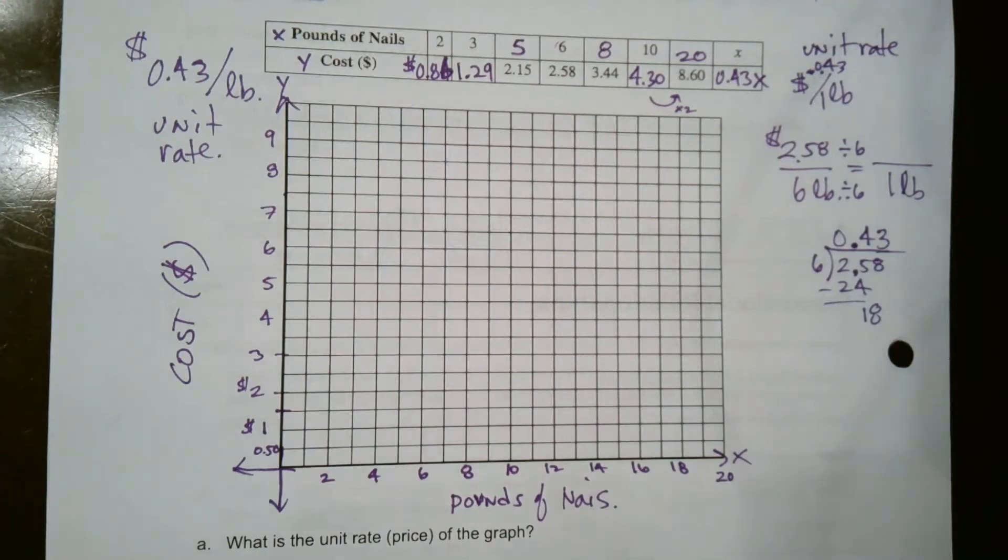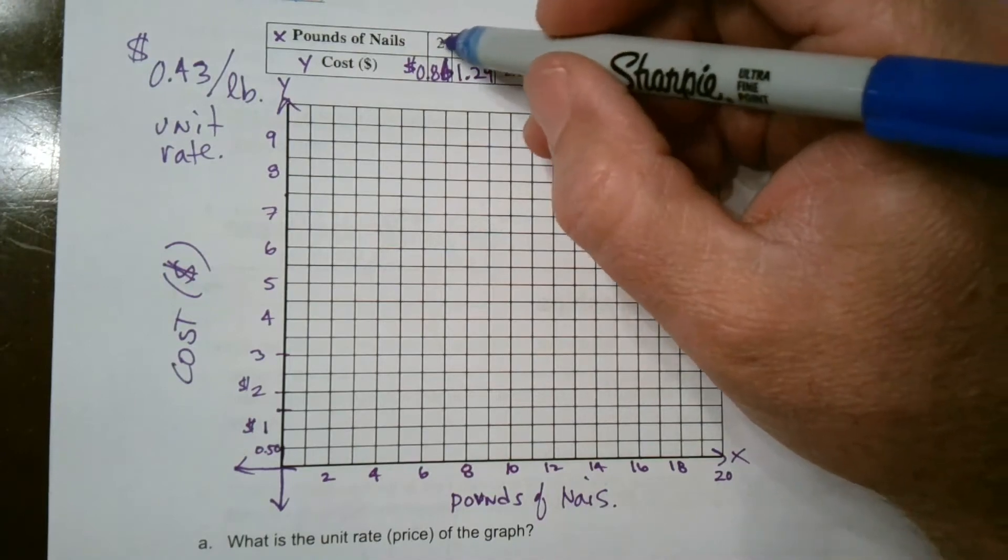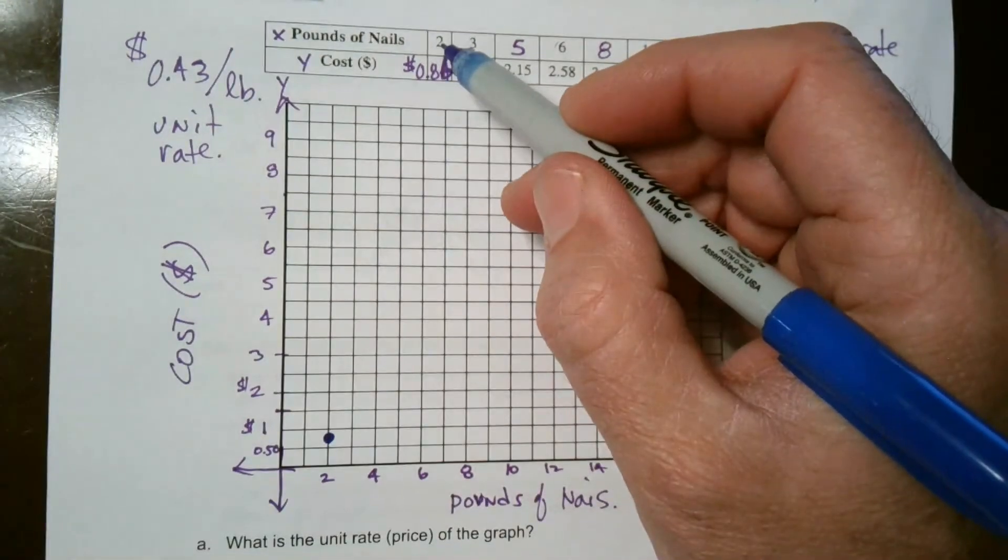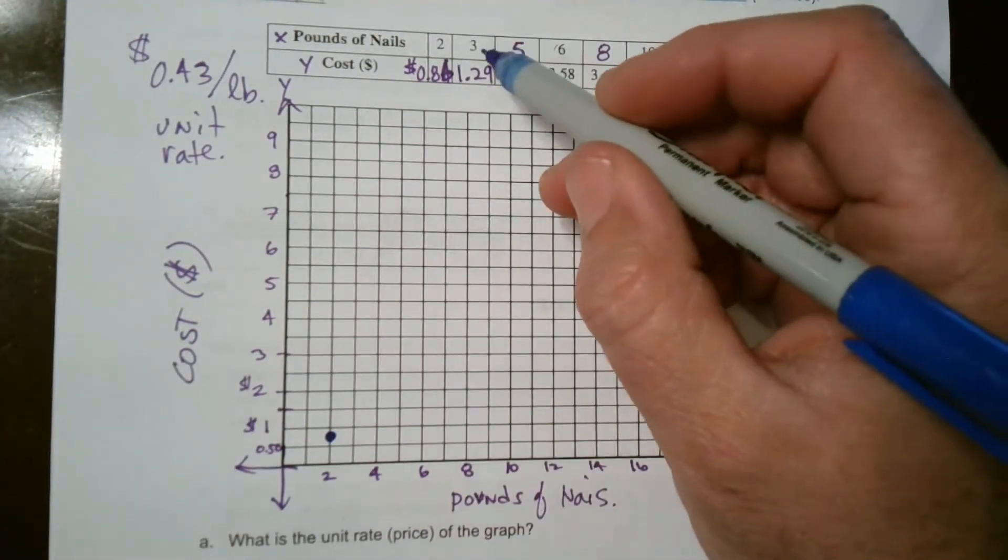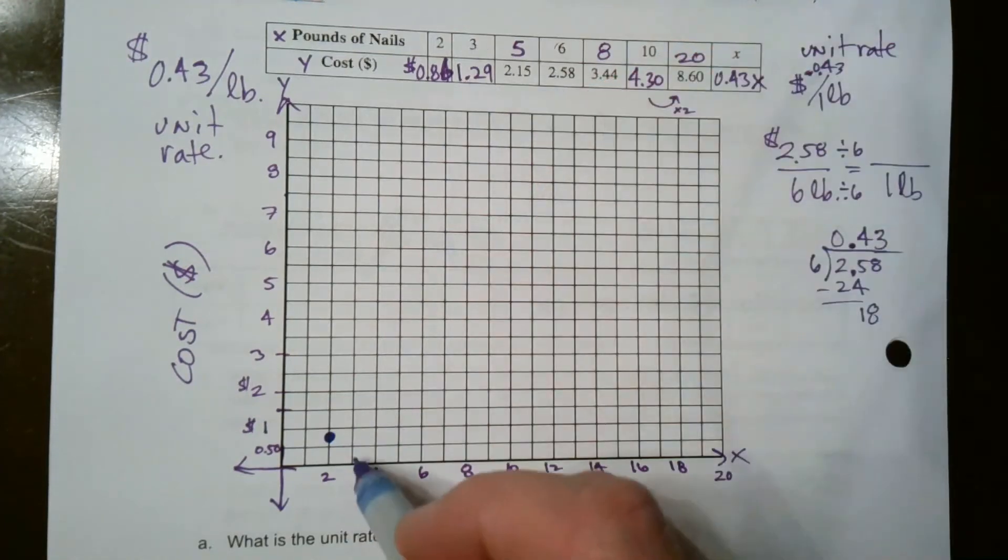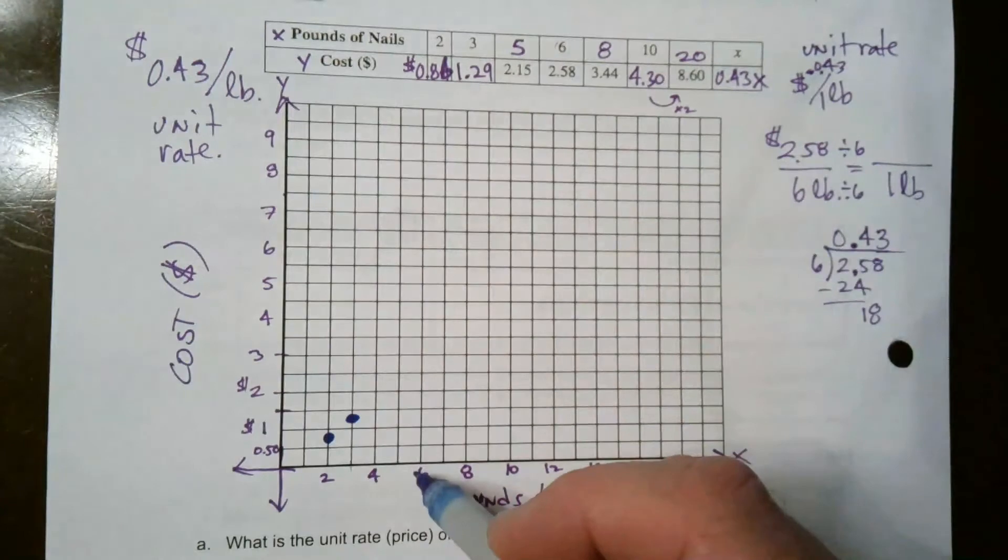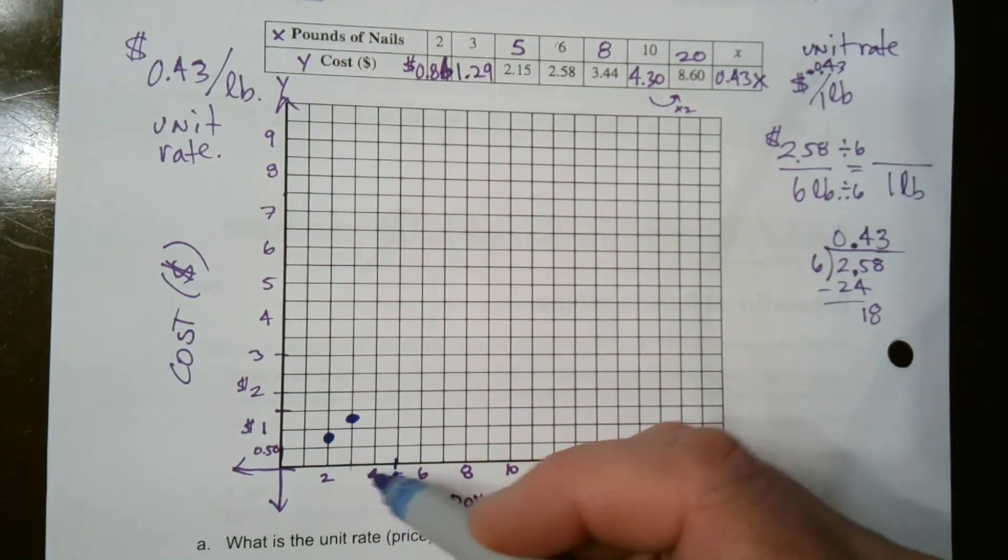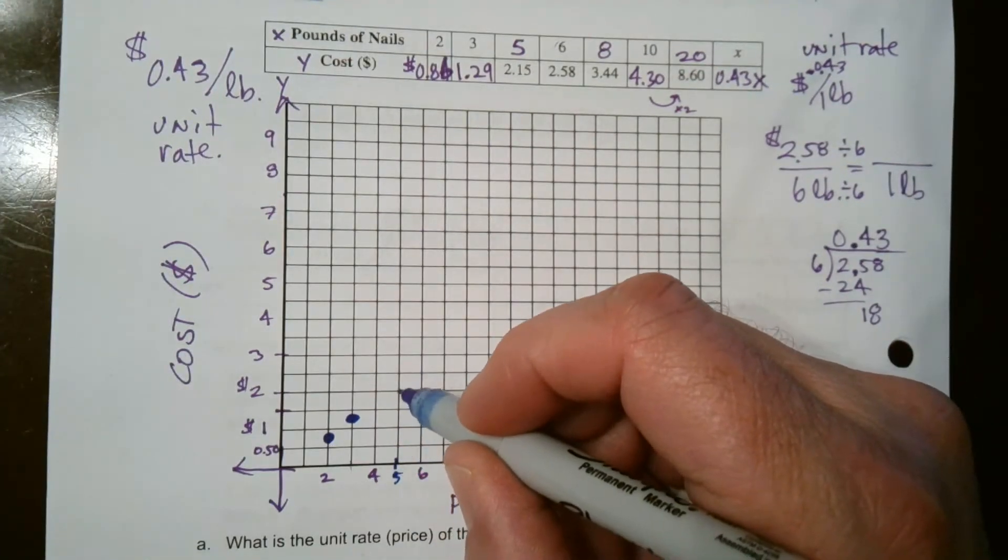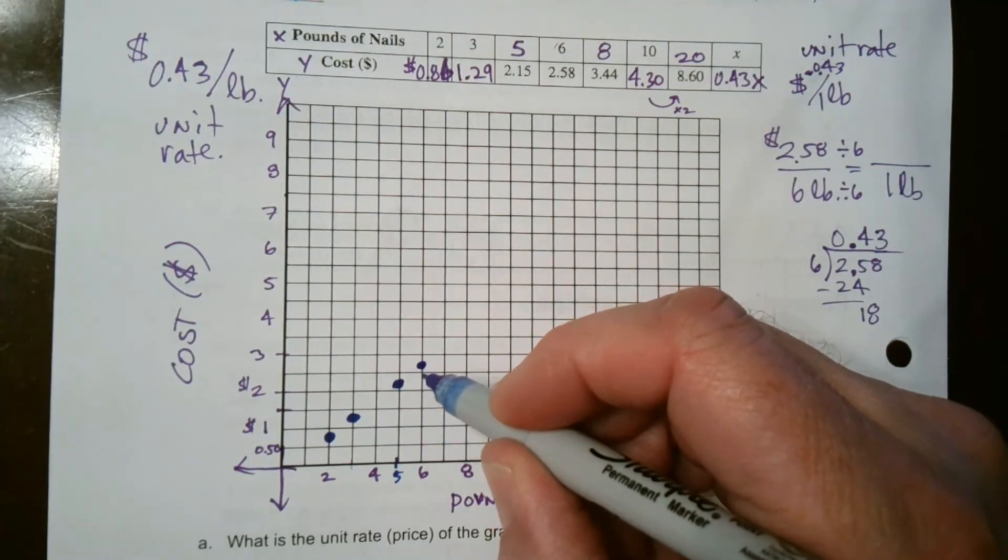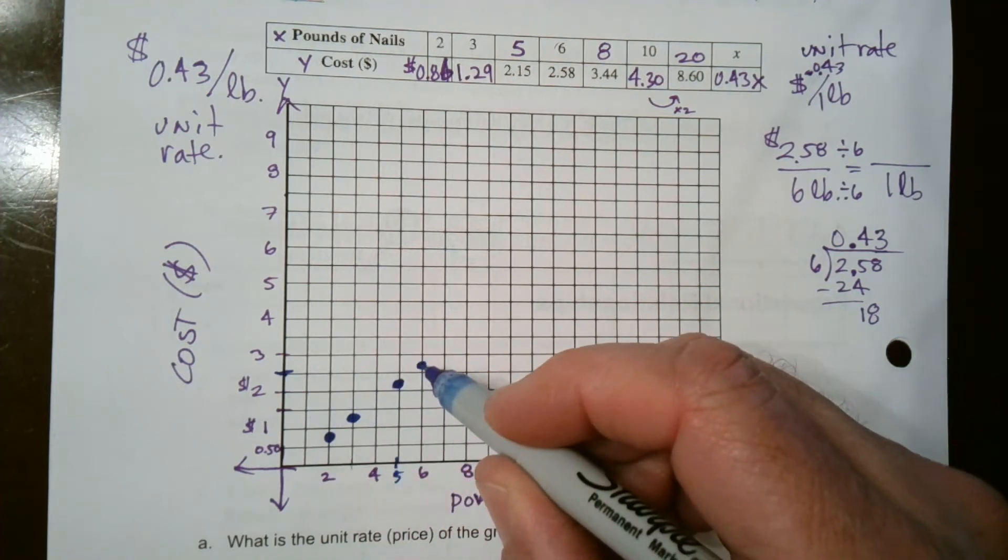Now I can graph. Let's start with our first point here, which is two. At two pounds of nails, it's 86 cents. Here's my two pounds. Where's 86? You're going to have to estimate. If that's 50 cents, that's a dollar. 86 would be just a little bit more than half. Three pounds is at $1.29. Here's three. At three pounds, I go up to $1.29, which is not more than half, it's below half. So it's right about there. Five, here's my five. Five and $2.15. This is $2, so 15 cents just a little bit above it. I have six at 258, which is just above $2.50.